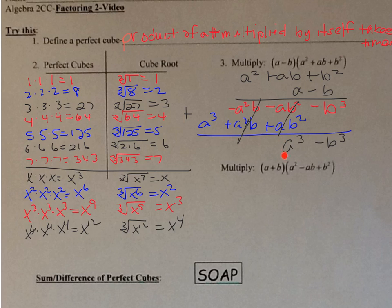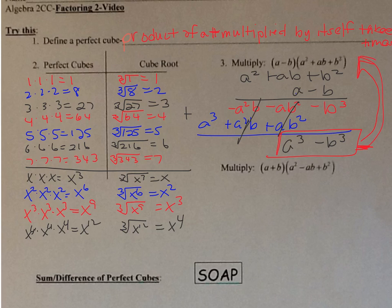This is called the difference — because it's minus — of perfect cubes. So when I factor the difference of perfect cubes, a cubed minus b cubed, this factored form is what I get. We're going to work on going from a cubed minus b cubed back to this factored form.